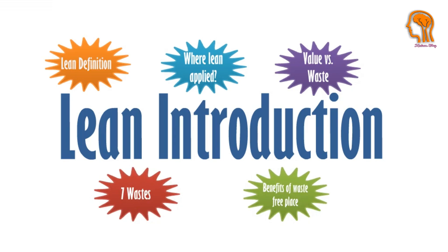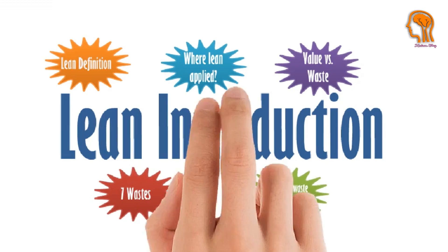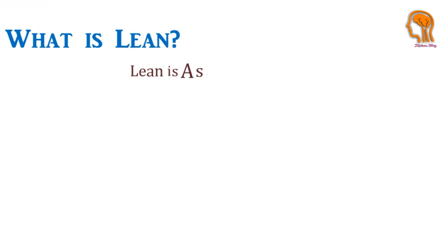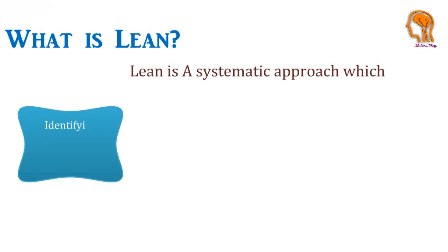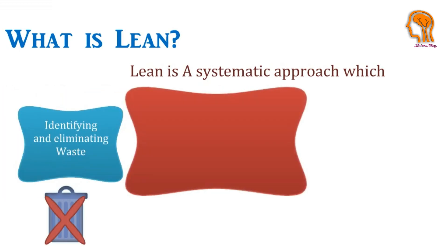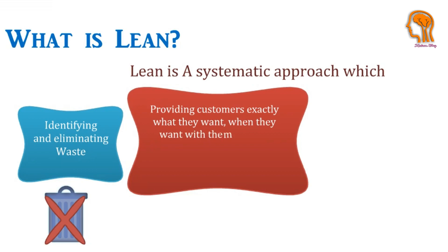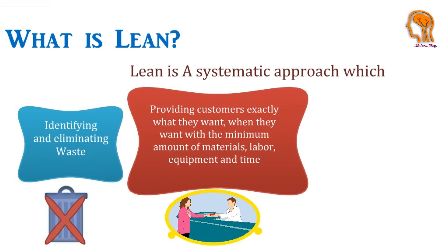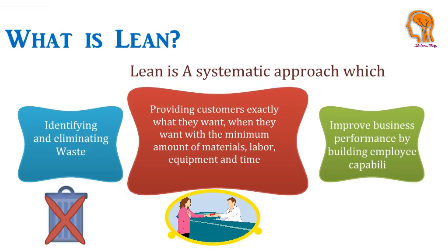Let's start with the definition of lean. Lean is a systematic approach to identifying and eliminating non-value-added activities, which are called waste, in all areas of the business — providing customers and consumers exactly what they want, when they want it, with the minimum amount of materials, labor, equipment, space, and time. It seeks to improve business performance by building employee capability to continually improve all areas of the business.